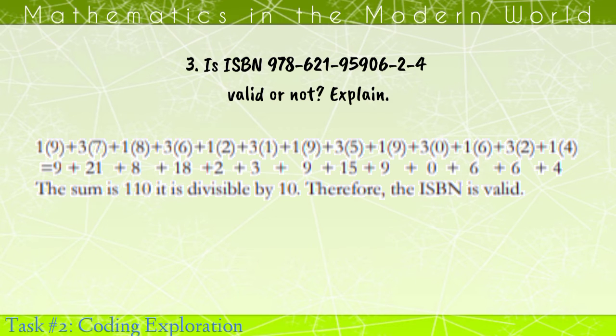To check this code again, we need to multiply by the number pattern which is 1-3-1-3-1-3 and so on. After getting the product, we add all the products to get the sum. The sum is 110. It is divisible by 10. Therefore, the ISBN is valid.